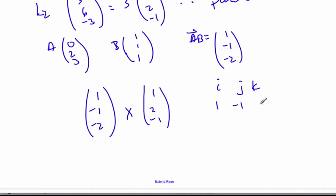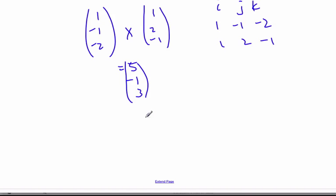So I get 1, negative 1, negative 2. 1, 2, minus 1. And I get, I'm going to hide these, and I get 1 plus 4 is 5. And then I go negative 2 plus 1 is negative 1. And then finally, 1, or sorry, 2 plus 1 is 3. Here is my normal vector.